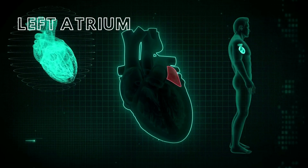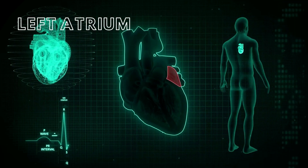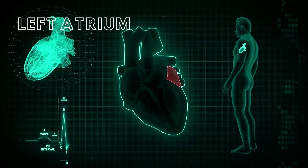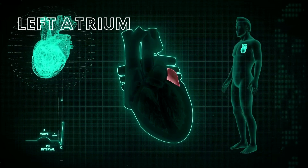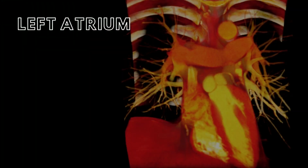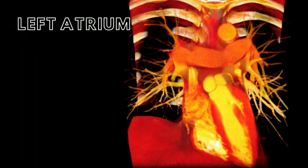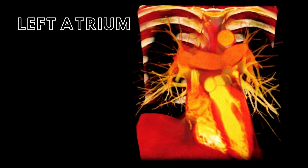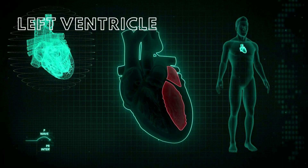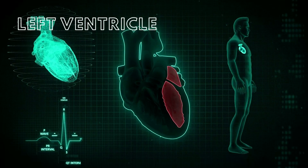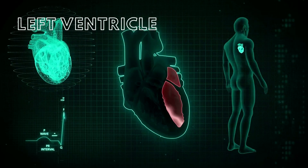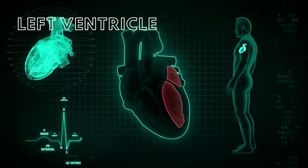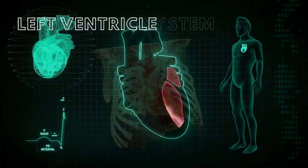The left atrium forms most of the base of the heart. Typically, three to four pulmonary veins, which carry oxygen-rich blood from the lungs, empty into the left atrium. The walls of the left atrium are slightly thicker than those of the right atrium. The opening between the left atrium and left ventricle is the location of the left AV valve. The left ventricle receives blood from the left atrium and pumps it out via the aorta to all of the organs of the body.